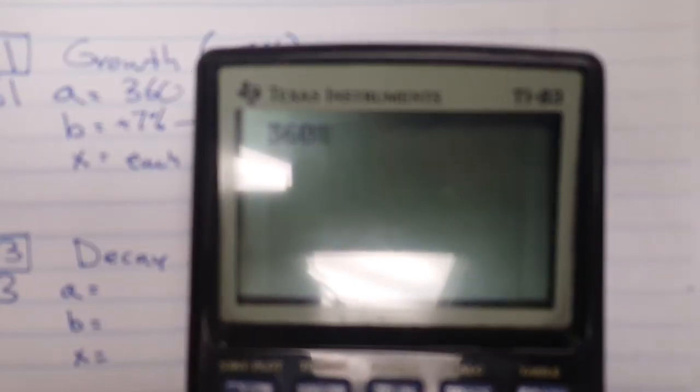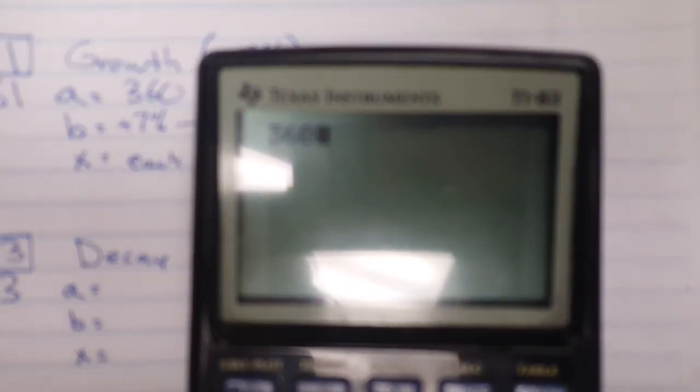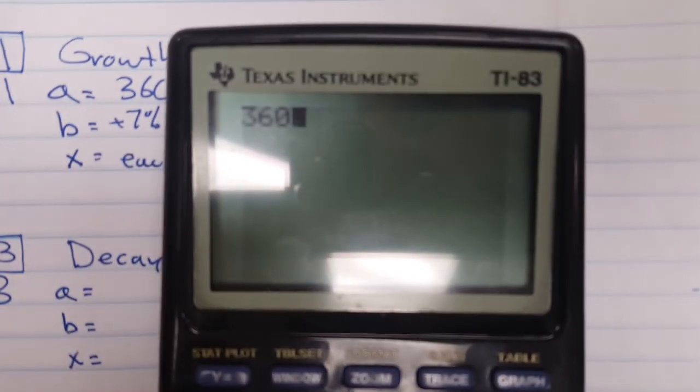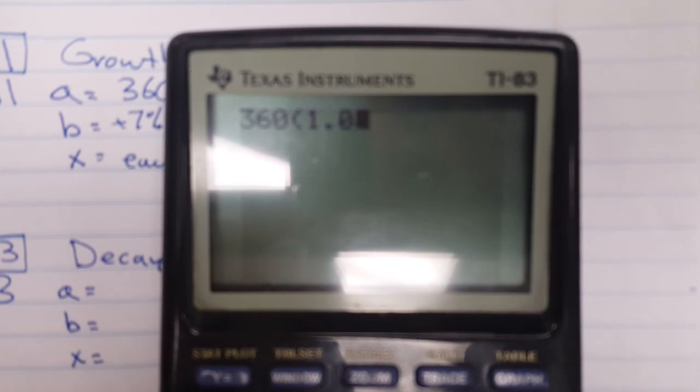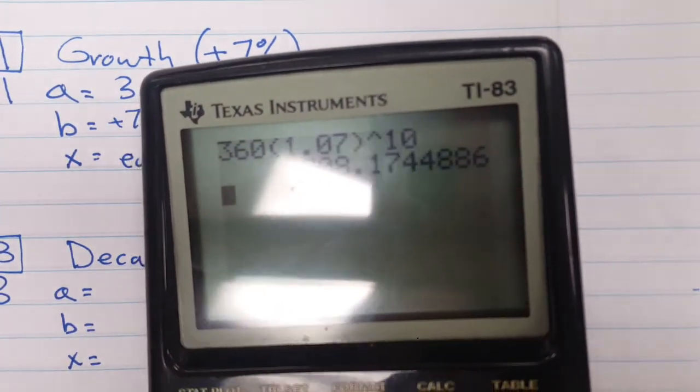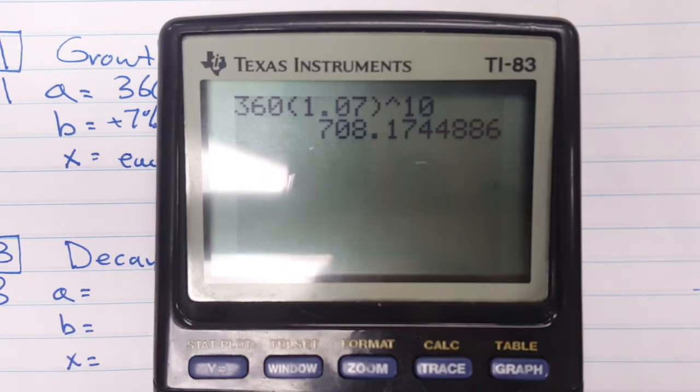360. Oops. Sorry, it's not focusing on my calculator. Focus, please. Nope. Nope. Nope. Doesn't like me. Nope. There we go. A little bit better. Okay. 360. 1.07 to the power of 10. I really wish that would not be so bad. There we go.